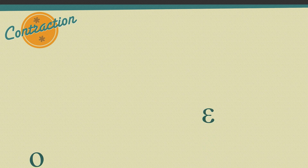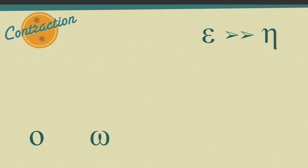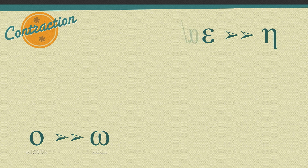Notice how there are two vowels that are always short and two that are always long — these have relationships. If an epsilon comes into contact with another vowel, or needs to lengthen for some other reason, it will become an eta. If an omicron comes into contact with another vowel or needs to lengthen, it can become an omega. An alpha can also lengthen up to an eta when it comes into contact with another vowel or needs to lengthen.